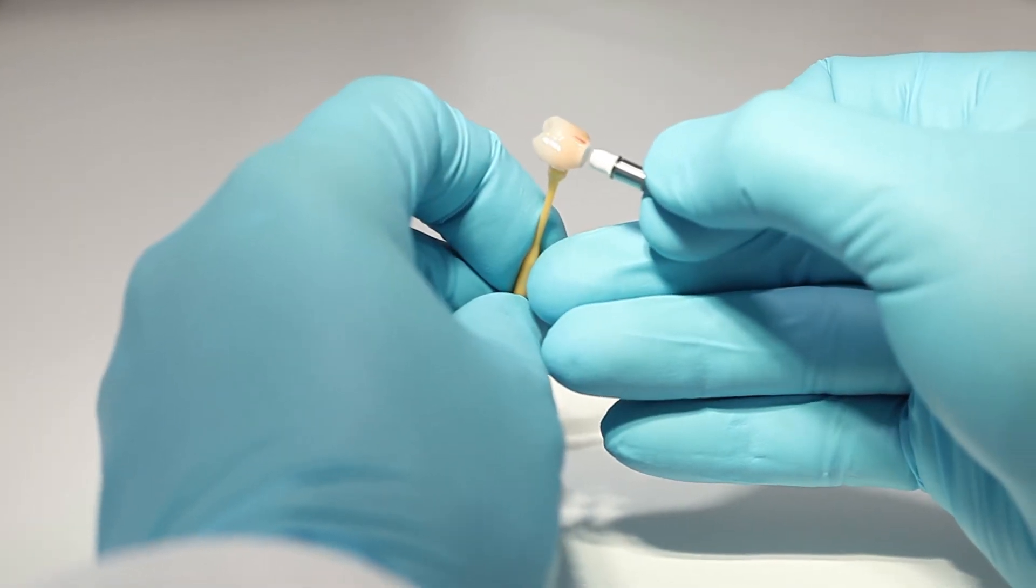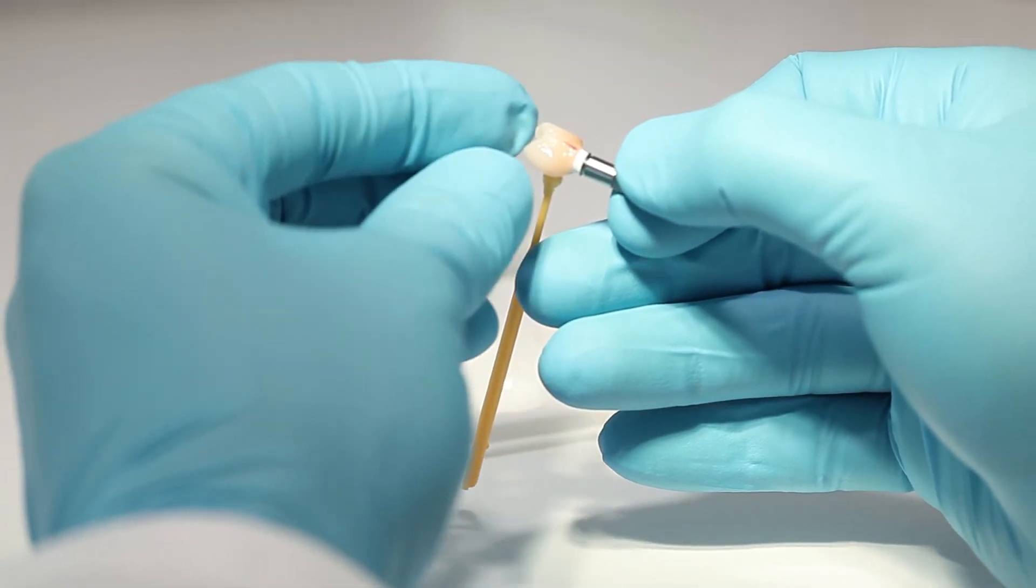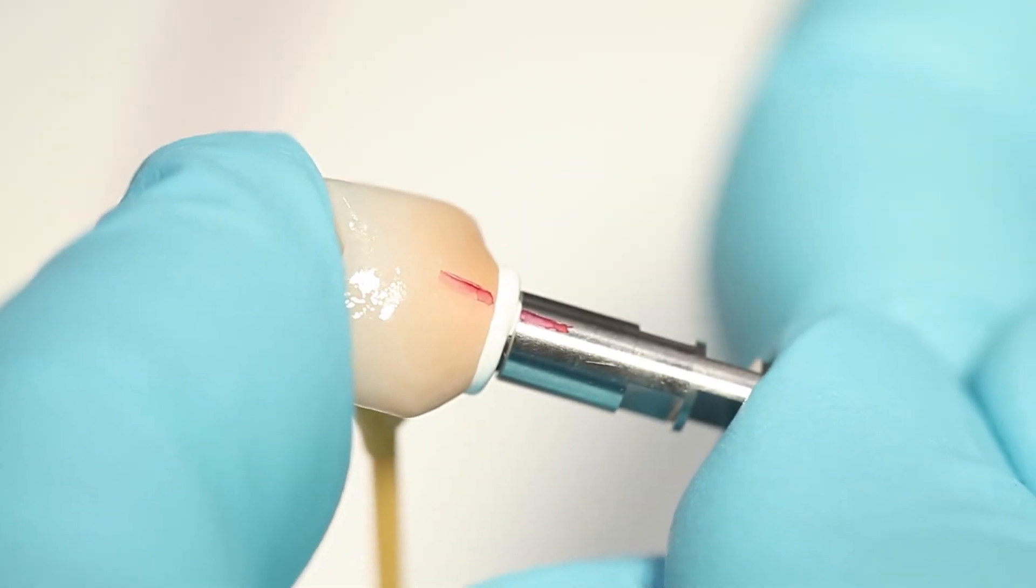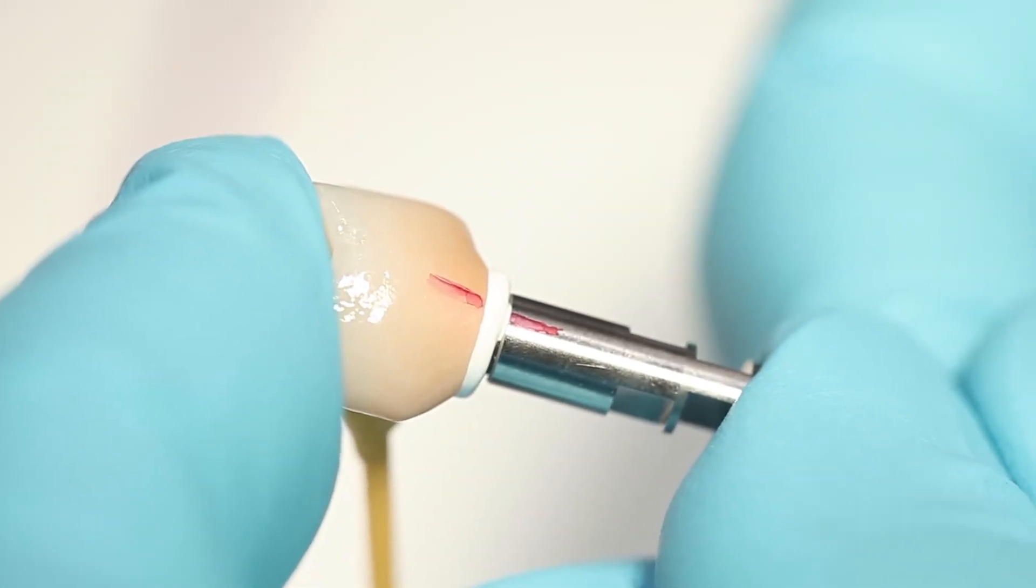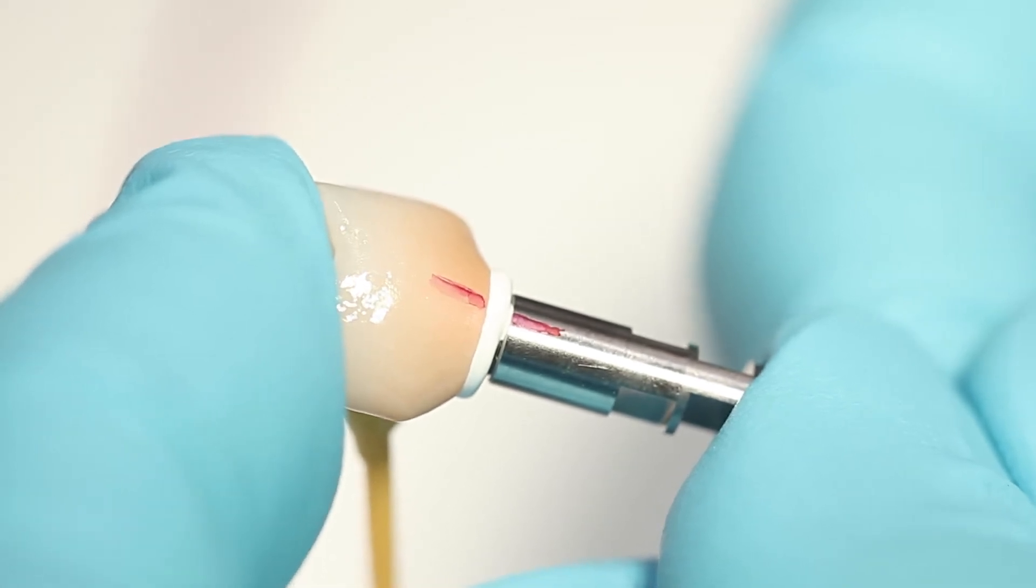Next, place the ceramic structure over the tie base in such a way that the position markings are aligned. Verify the correct final position at the transition between the tie base and ceramic structure. Then press the parts firmly together for 5 seconds.